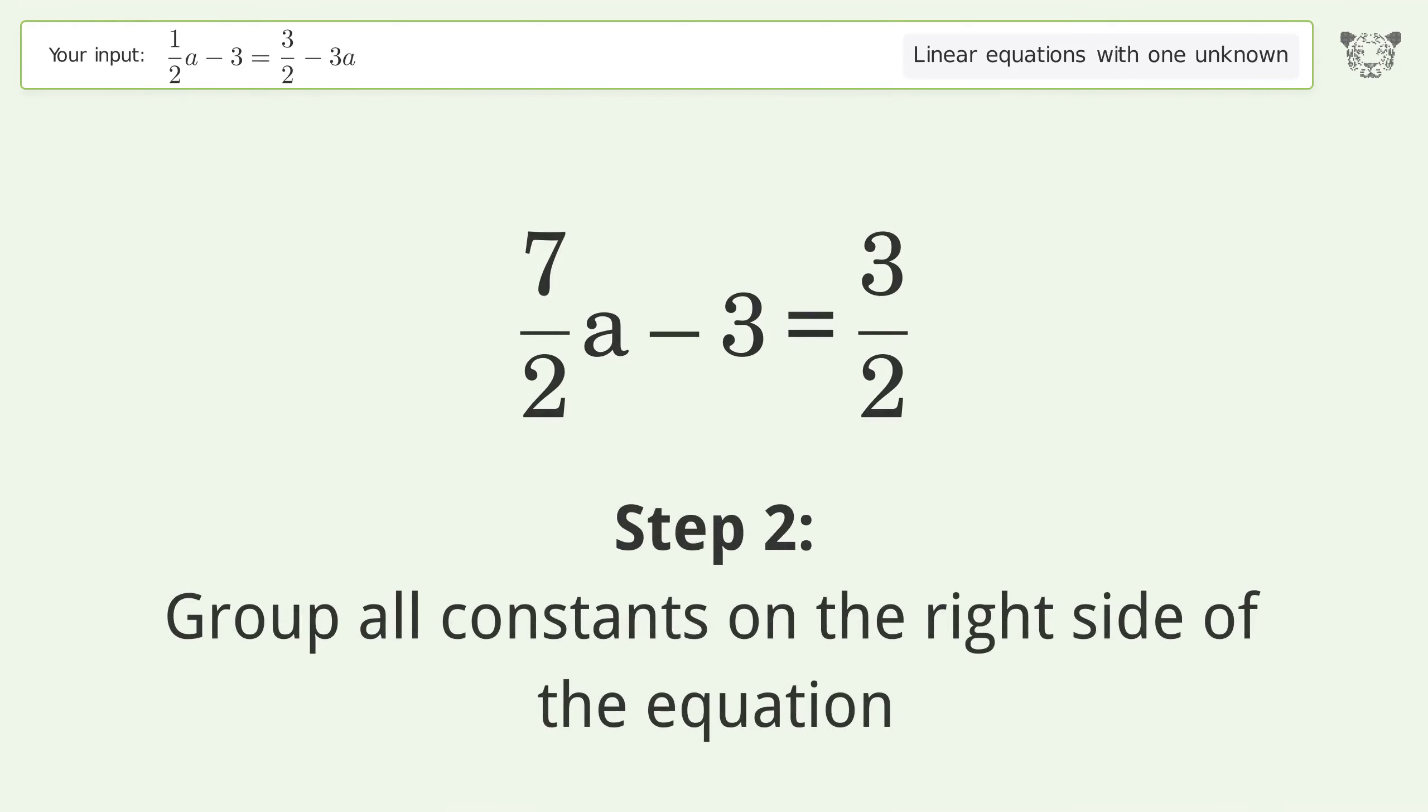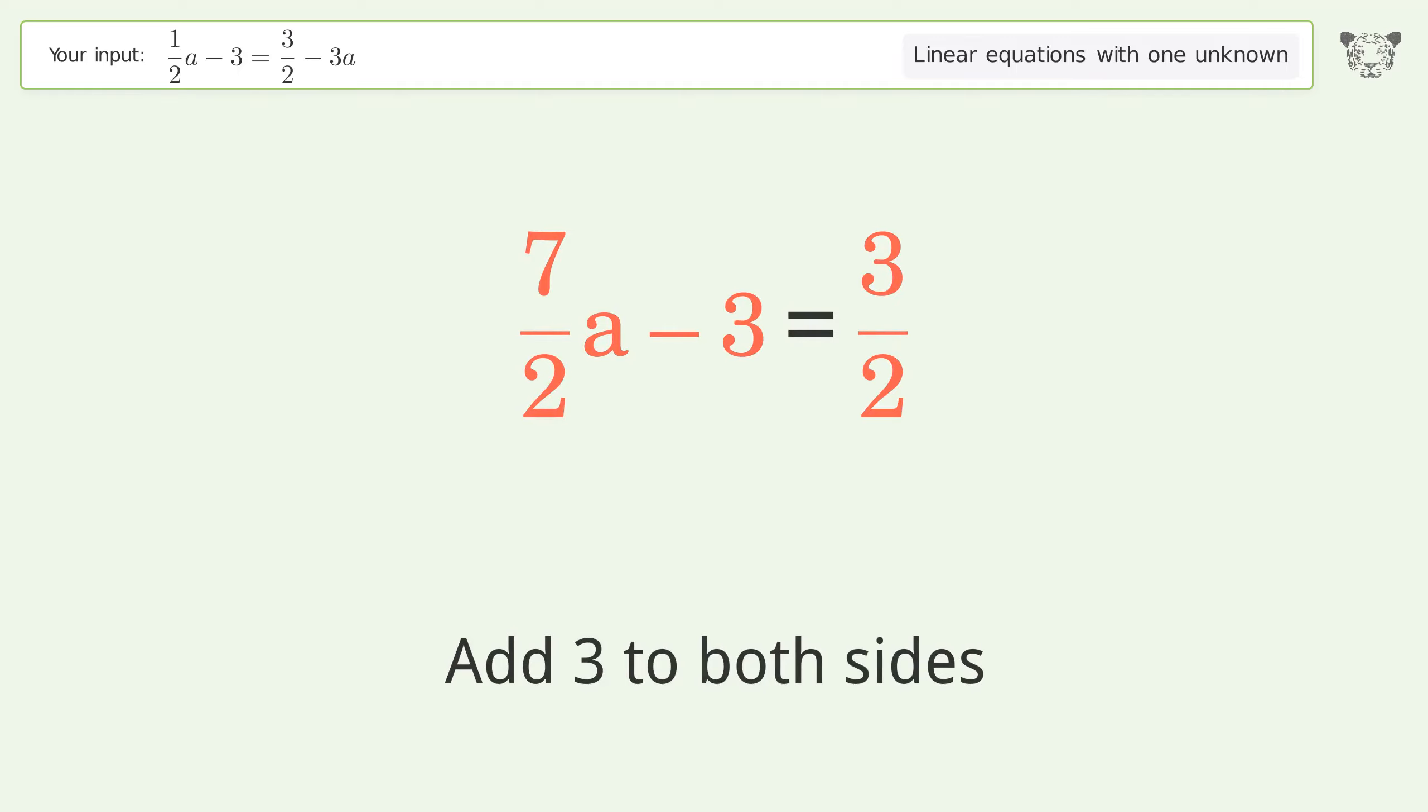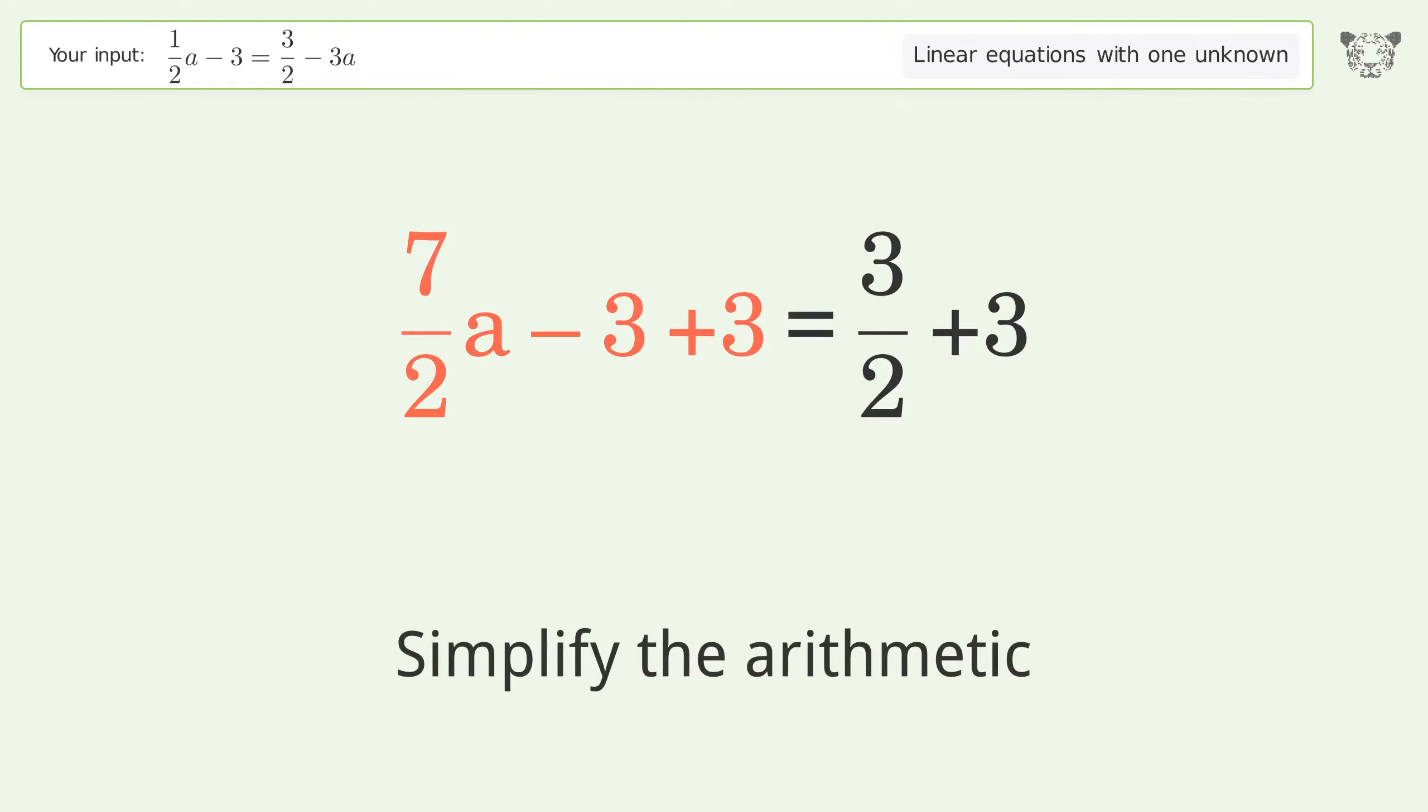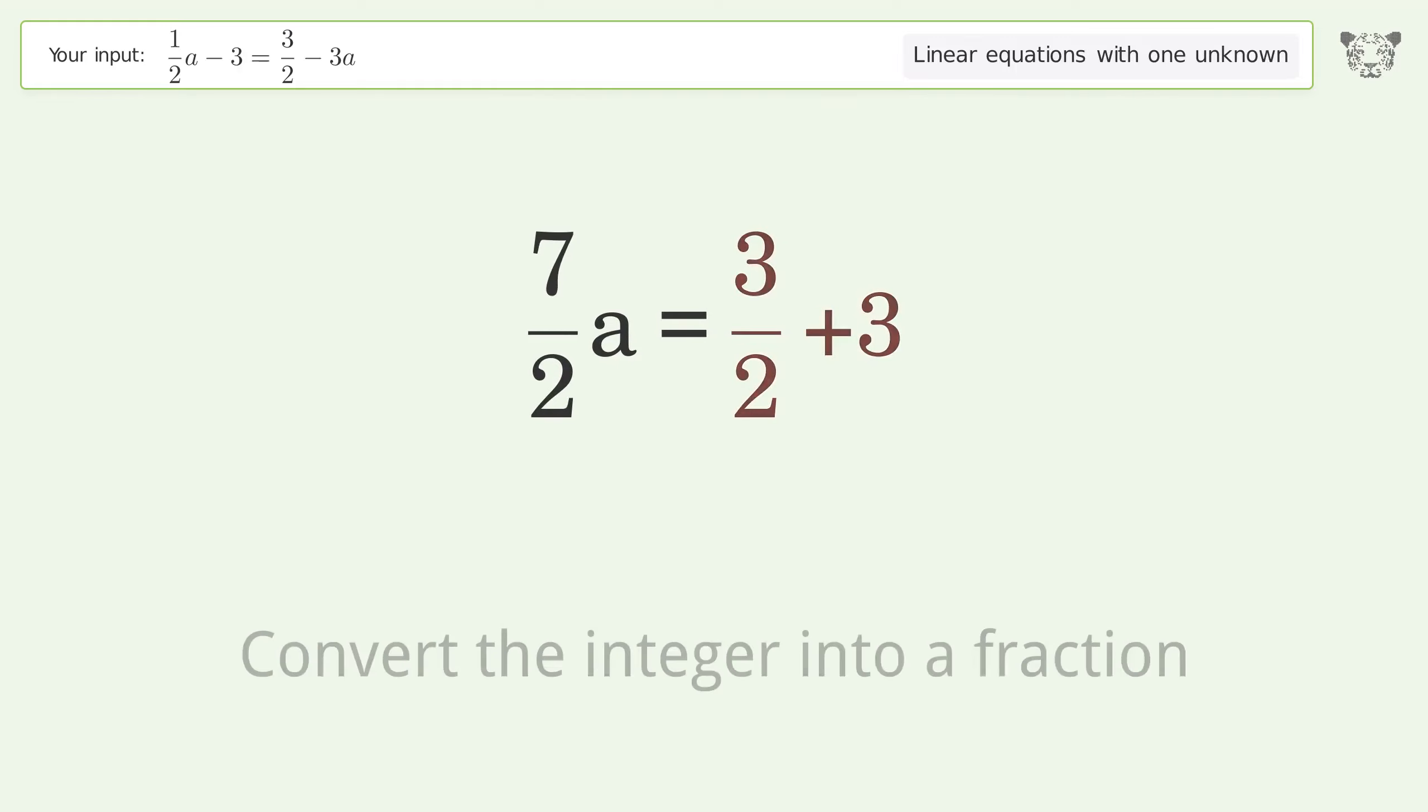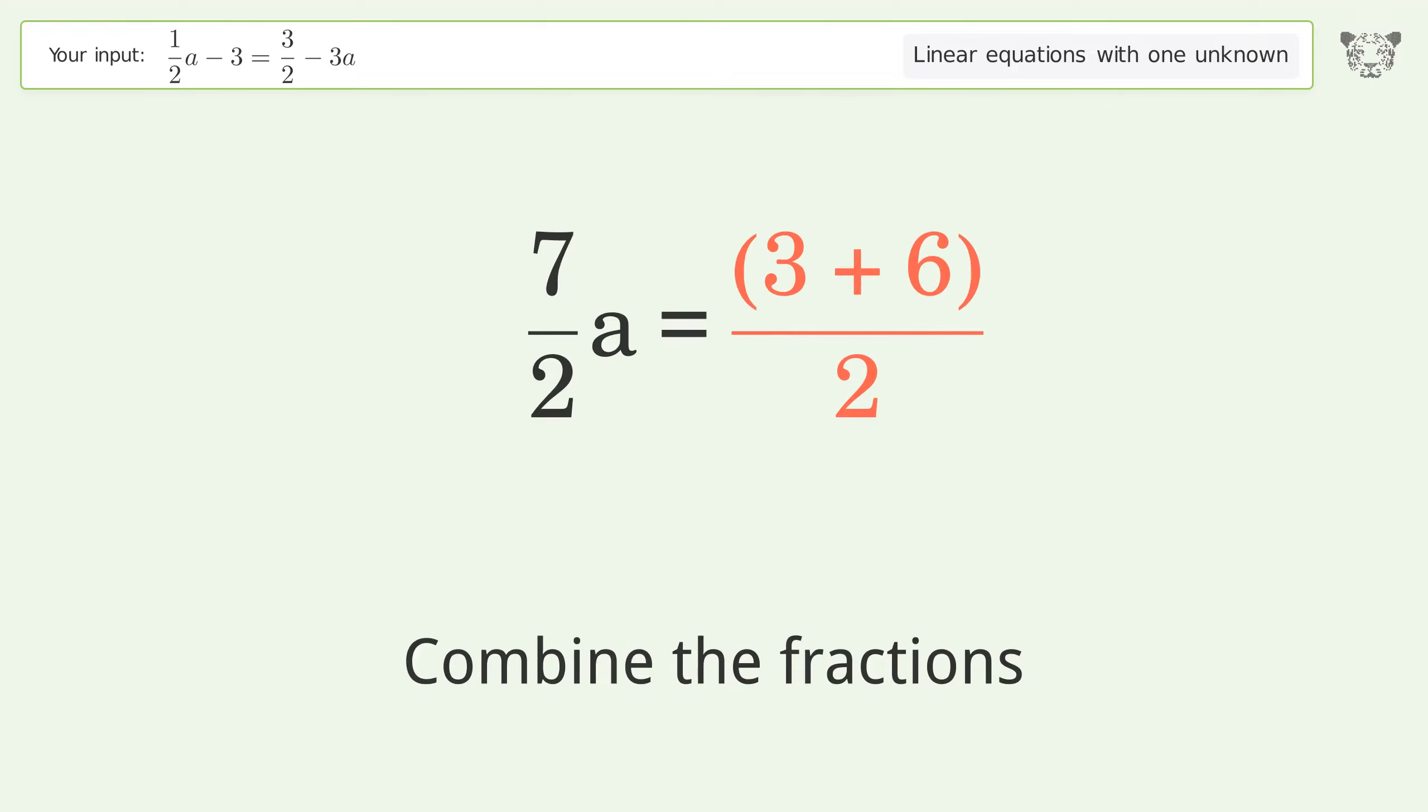Group all constants on the right side of the equation. Add three to both sides. Simplify the arithmetic. Convert the integer into a fraction. Combine the fractions. Combine the numerators.